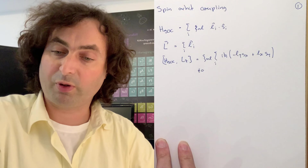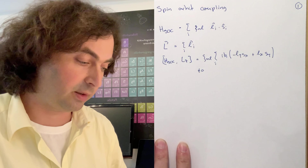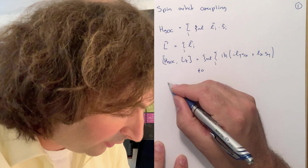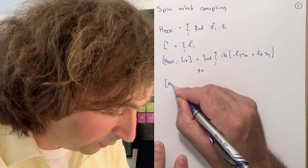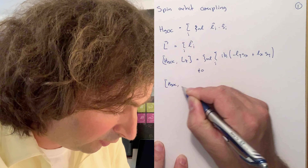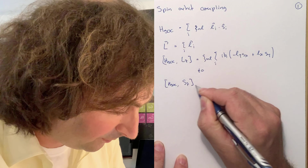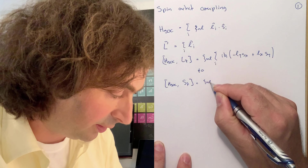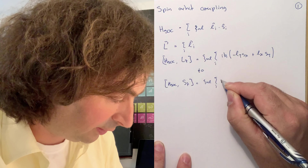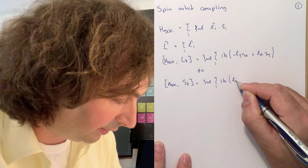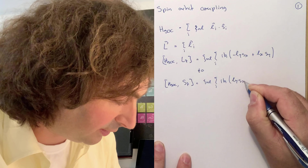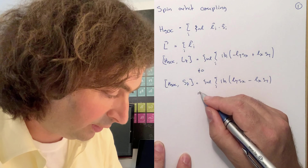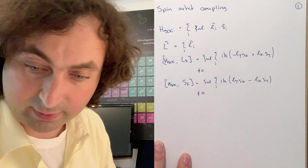So the moment we have spin-orbit coupling, L is no longer a conserved quantum number. And the same is true for the spin, and we find that the commutator gives i·ħ times (ly·sx − lx·sy), and that is also non-zero.